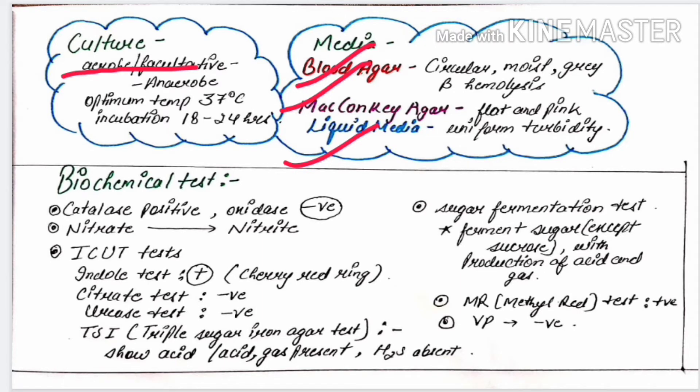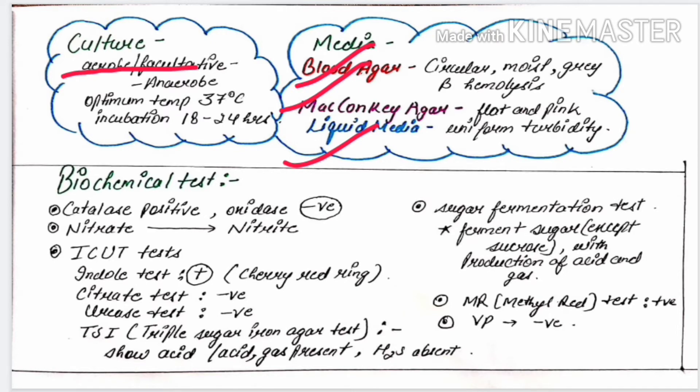Next is MacConkey. In MacConkey, we can see flat and pink colored colonies. In liquid medium, peptone water broth is used and it produces uniform turbidity.